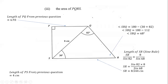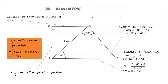We also calculated the length of PS, which is the height of the trapezium needed for the formula — that was 4 centimeters from part one. We can now find the area: A = ½(a + b) × height = ½(PQ + SR) × PS = ½(6.93 + 8.54) × 4. When you put that into your calculator, the area of trapezium PQRS equals 30.94 centimeters squared.